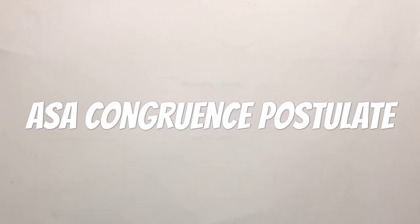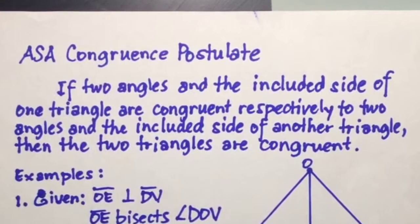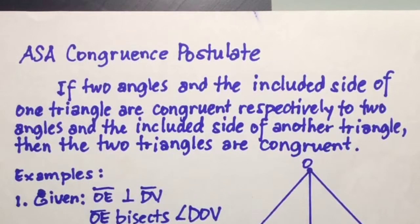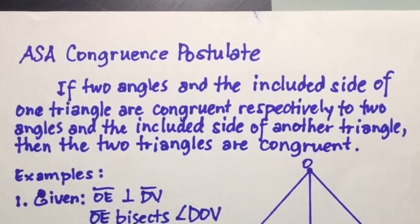For today's video, I'm going to discuss the ASA congruence postulate. ASA congruence postulate states that if two angles and the included side of one triangle are congruent respectively to two angles and the included side of another triangle, then the two triangles are congruent.